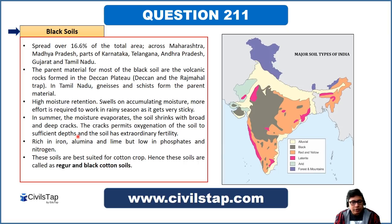Black soils are rich in iron, alumina, and lime, but low in phosphates and nitrogen. They are best suited for cotton crops; hence these soils are also known as black cotton soils. Cotton crops get very good yields in black soils.